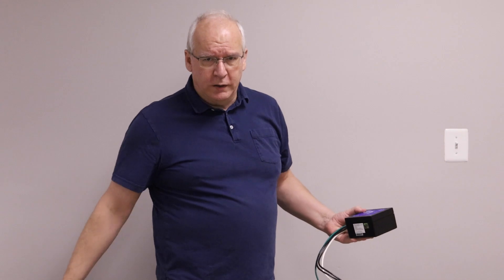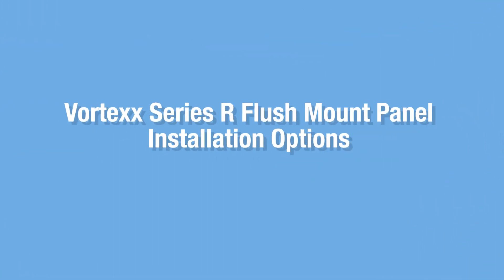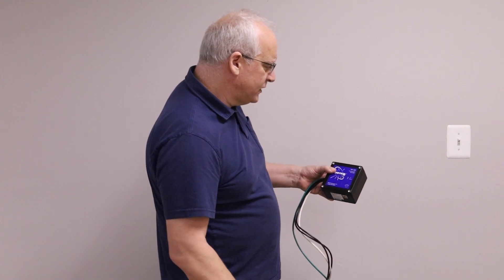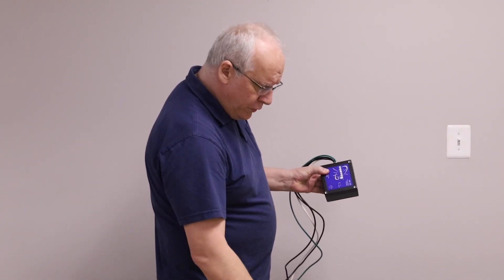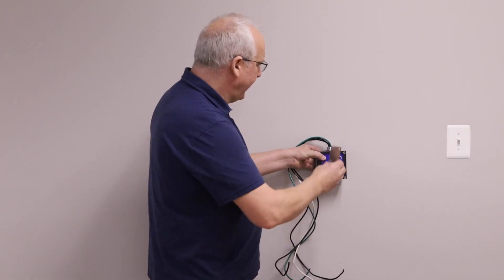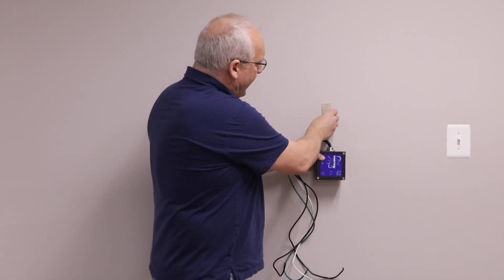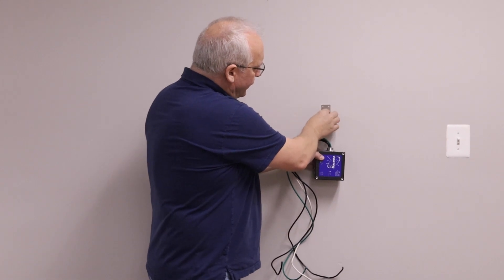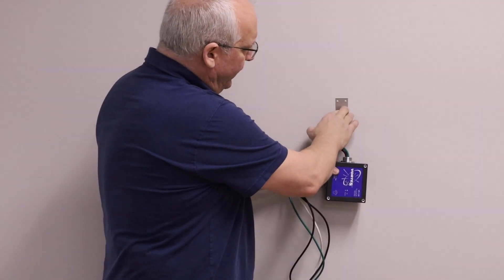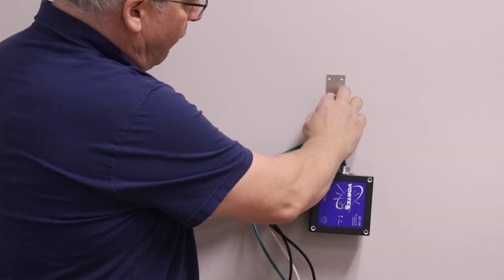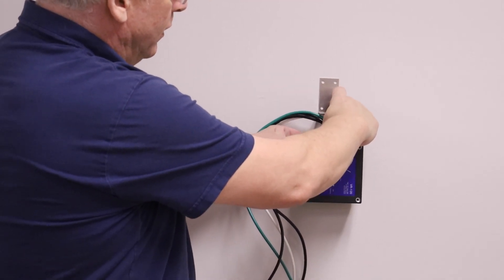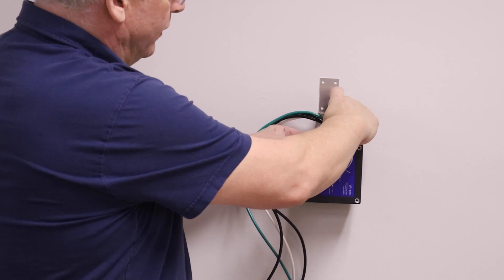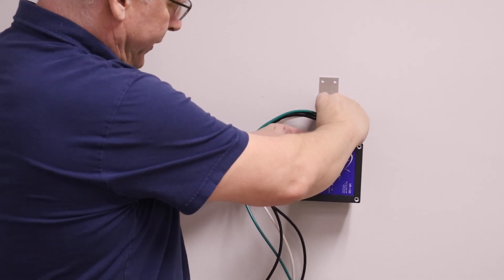For a flush mount panel you have a couple of options. Since the Vortex Series R has an audible alarm, you can mount it inside the panel using the optional bracket. Secure the bracket to the panel with four screws and then secure the surge protector to the bracket using the nipple and lock ring.